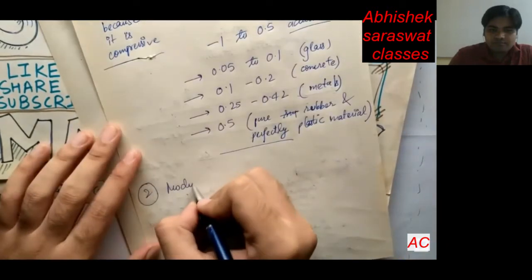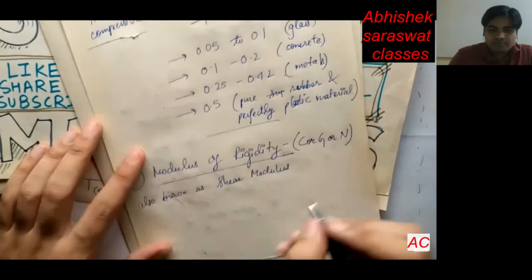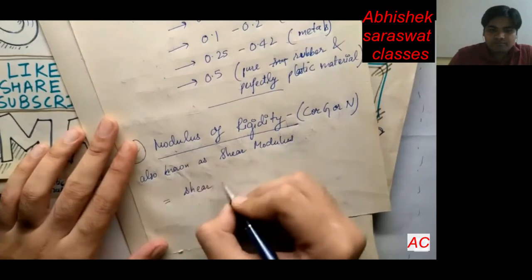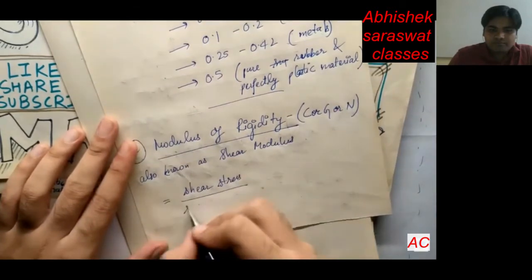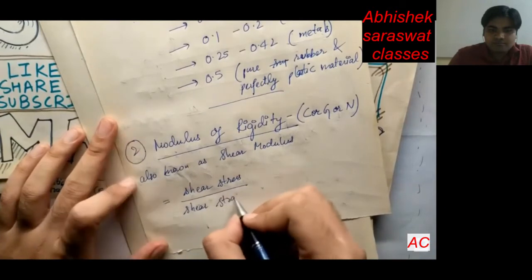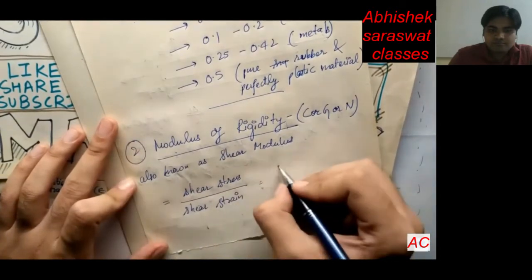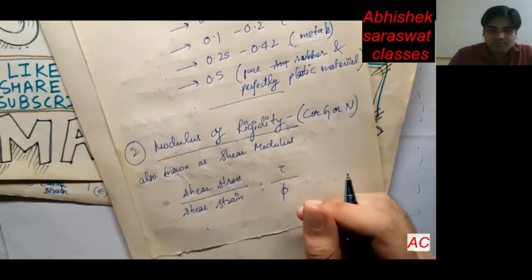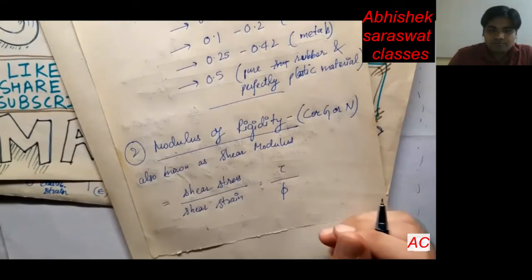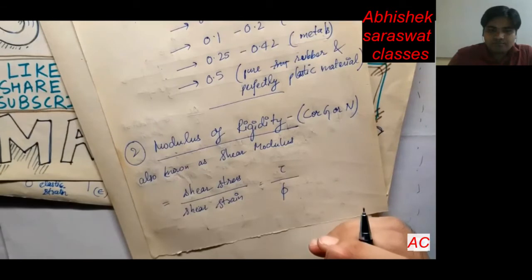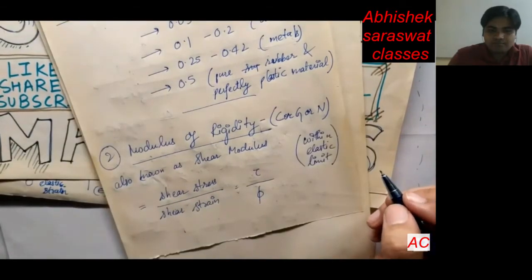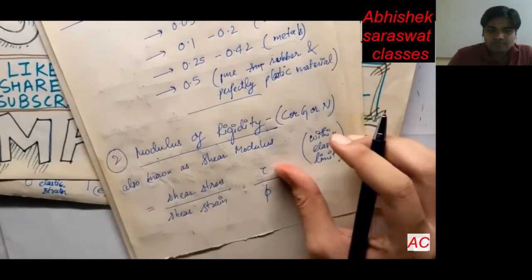The next elastic constant is modulus of rigidity, also known as shear modulus. It is denoted by C, G, or N. The modulus of rigidity is the ratio of shear stress to the corresponding shear strain. So modulus of rigidity equals shear stress divided by shear strain, that is tau divided by phi.